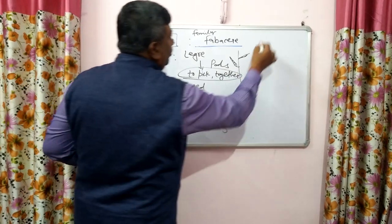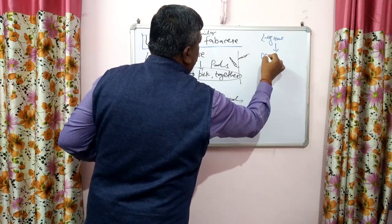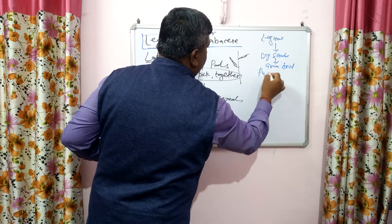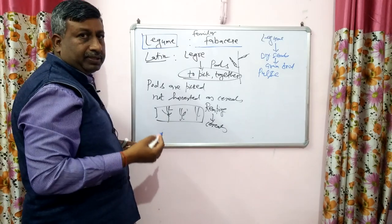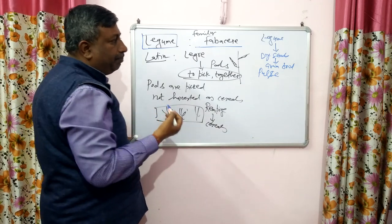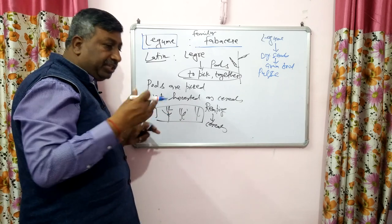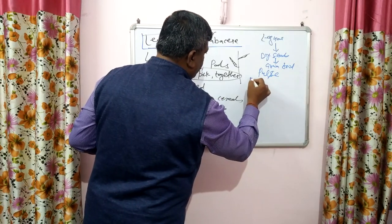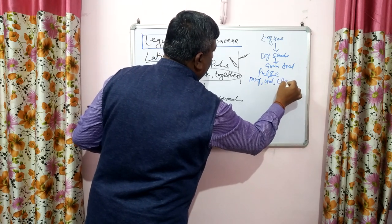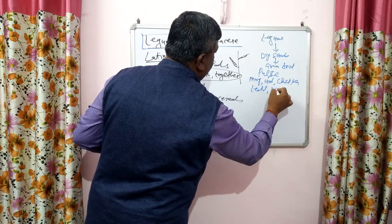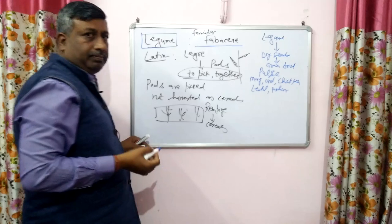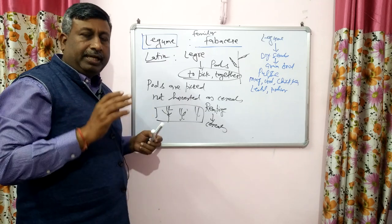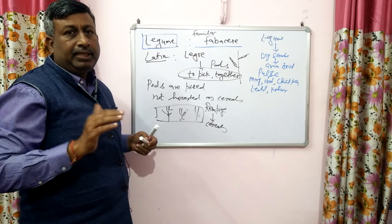Legumes whose dry seed is used as a grain for food purpose are known as pulses. If the seeds are used for food purpose — making dal — then it is known as a pulse crop. Examples of pulse crops include mung bean, urd, chickpea, lentil, and arhar (tur). So pulse crops are actually legumes, but their dry seed is specifically used as food.